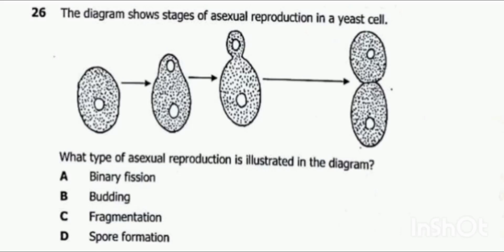Let's look at question number 26. The diagram shows stages of asexual reproduction in a yeast cell. What type of asexual reproduction is illustrated in the diagram?